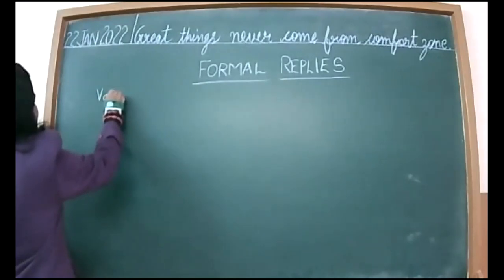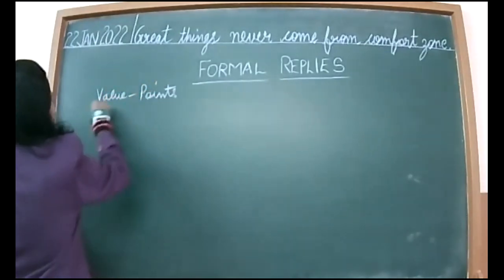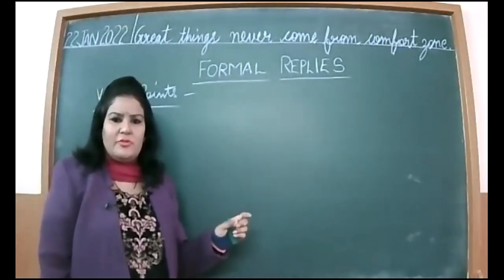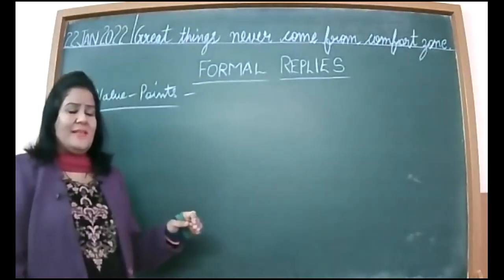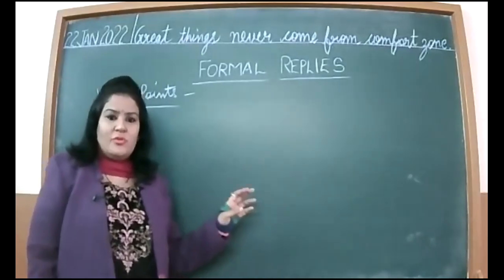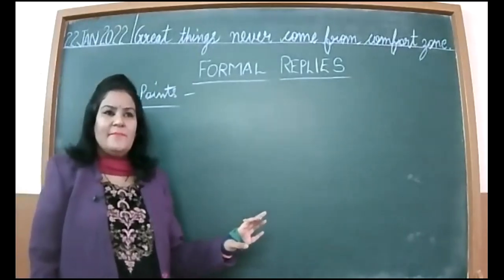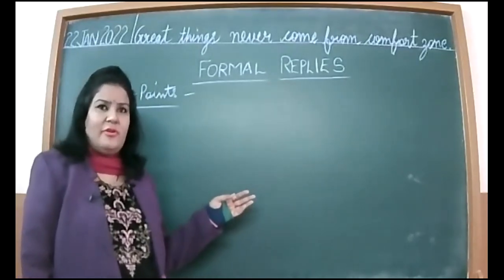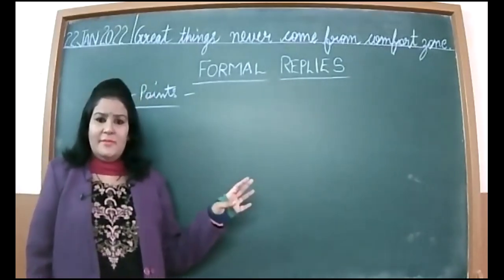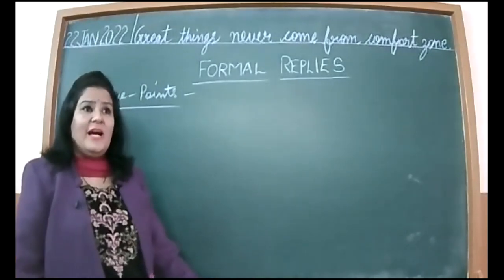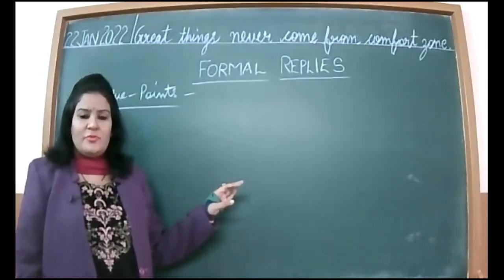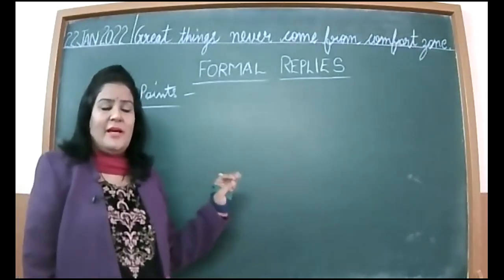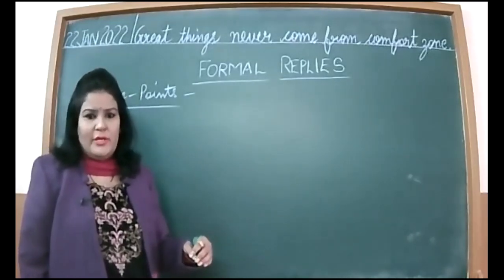A formal reply can come from an individual - suppose a VIP or dignitary was invited to host a show, be the jury member, preside over a function, or be the chief guest. That person has to confirm their presence. Sometimes they do not have time due to prior engagements - meaning they have already committed somewhere else - so they write a reply either accepting or expressing regret.